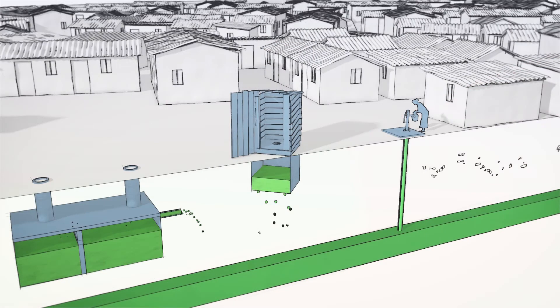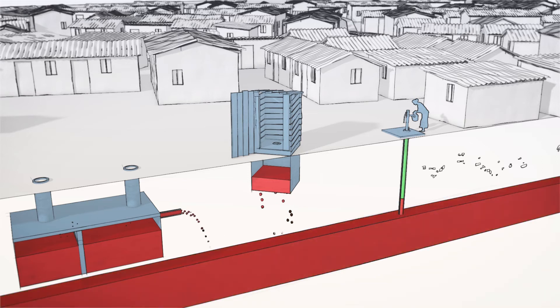Let us now look in more detail at the definition of fecal sludge contained and not contained. To do this, we need to look at the water table and soil conditions. The animation provides an example of a septic tank and a pit latrine that infiltrate into the ground. In the first scenario, the water table is low and therefore the risk of groundwater pollution is low — the result is fecal sludge contained, shown on the SFD as green. In another scenario, the water table is high and infiltrate from the septic tank and pit latrine drains into the groundwater, causing a significant risk of groundwater pollution. The result is fecal sludge not contained, shown on the SFD as red.